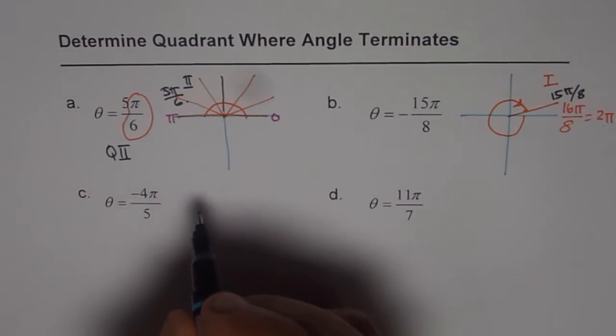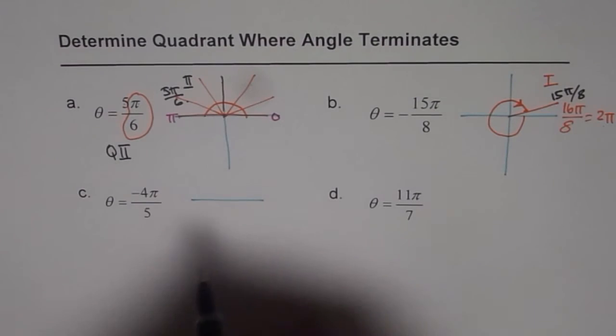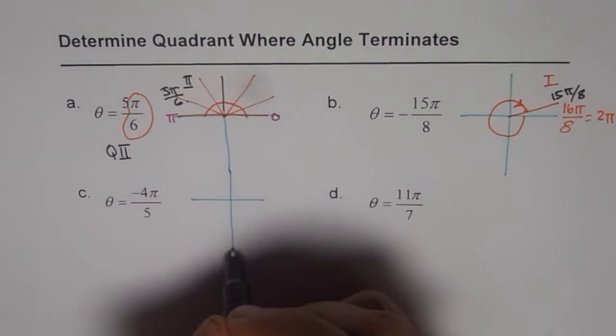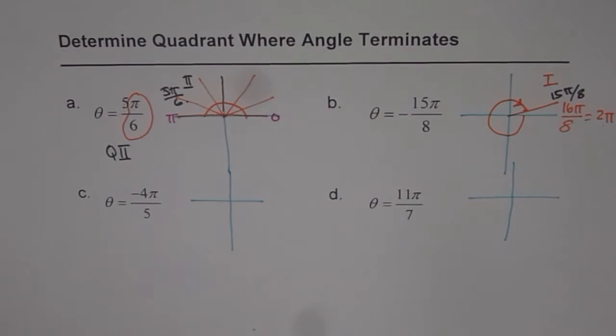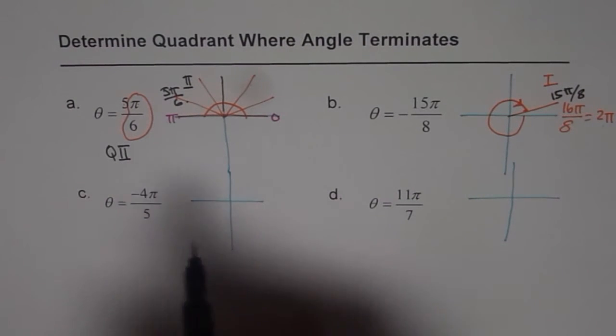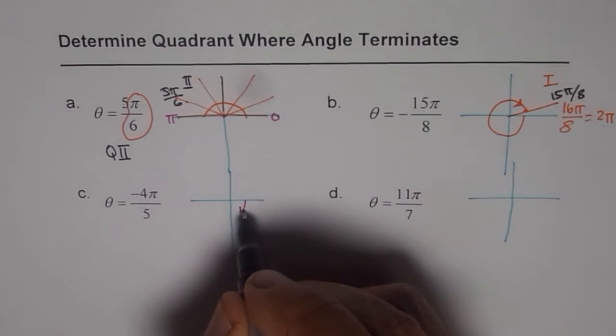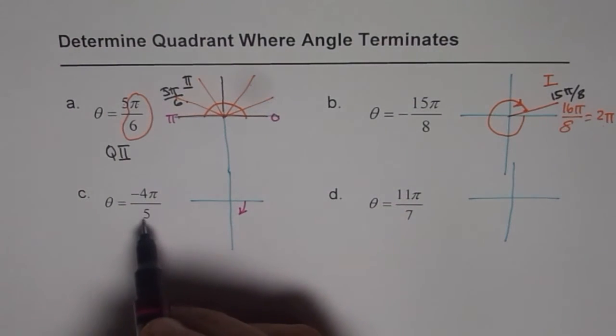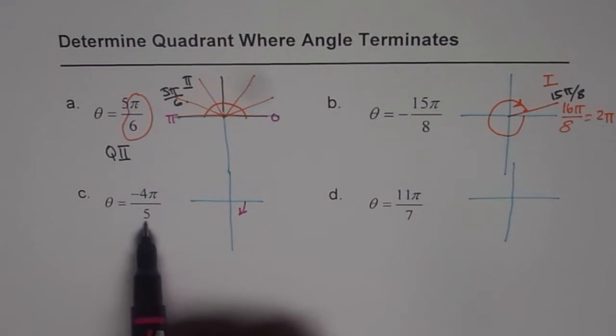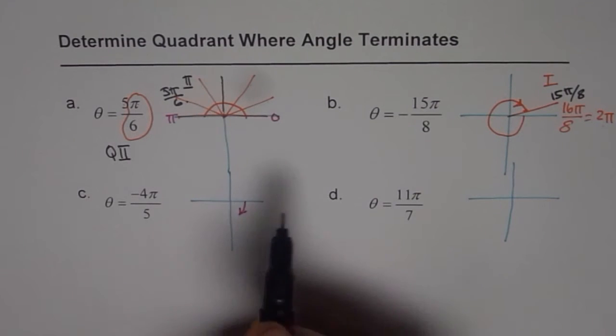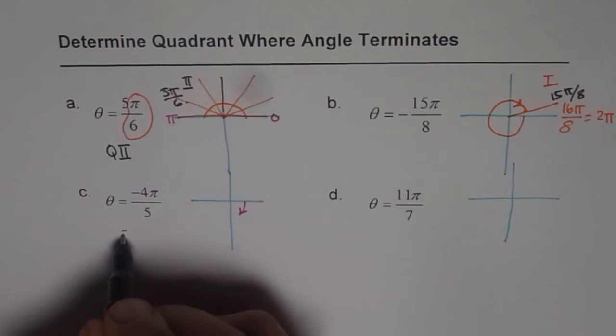Next one is minus 4 pi by 5. I would like you to do these two on your own. Pause the video and then look into my suggestion. Okay? Now here, we have minus, that means we will move in this direction. Pi by 5. Now, we have odd number here. It is difficult to divide the pi into 5 portions. Think about it like this.